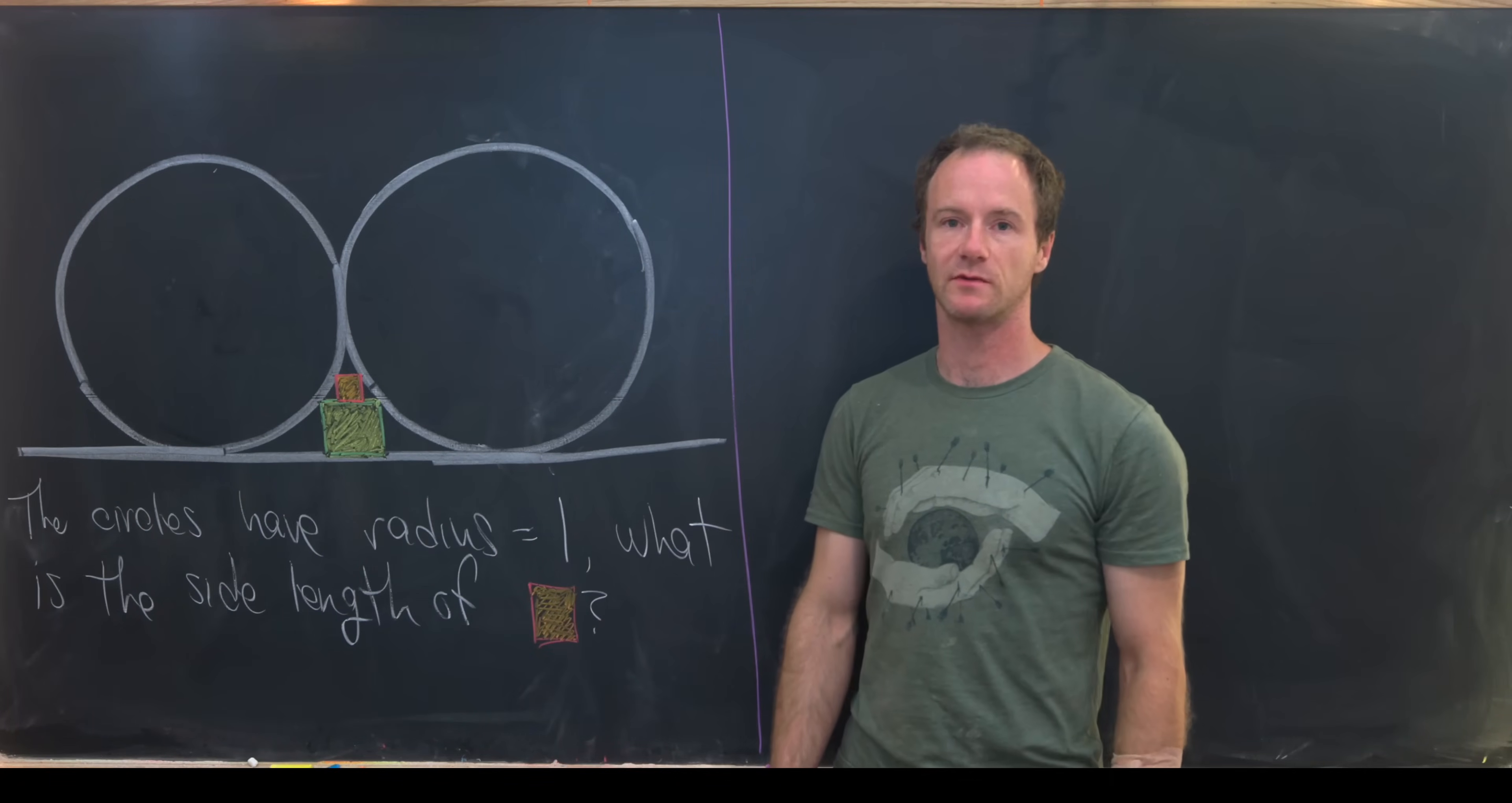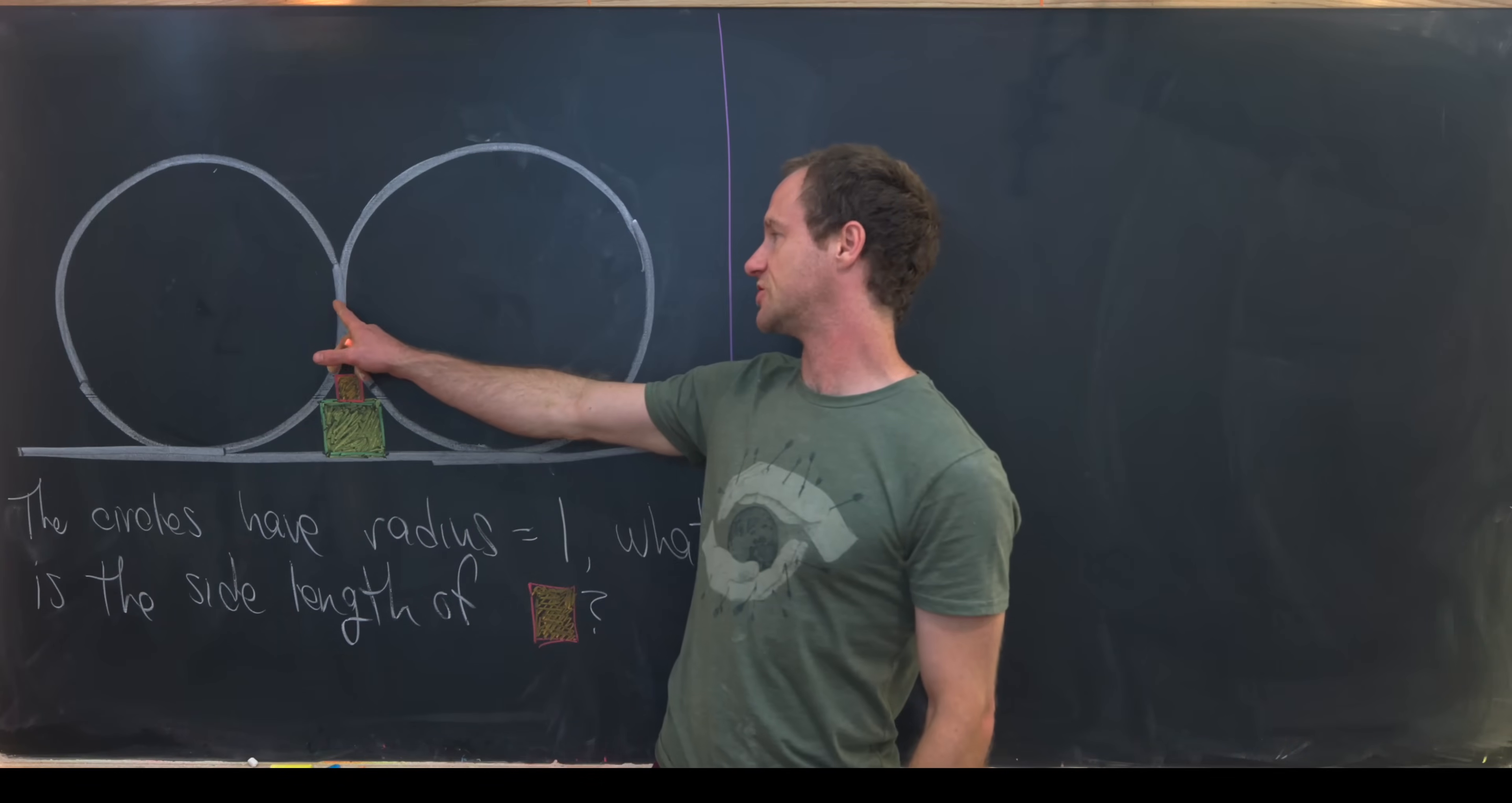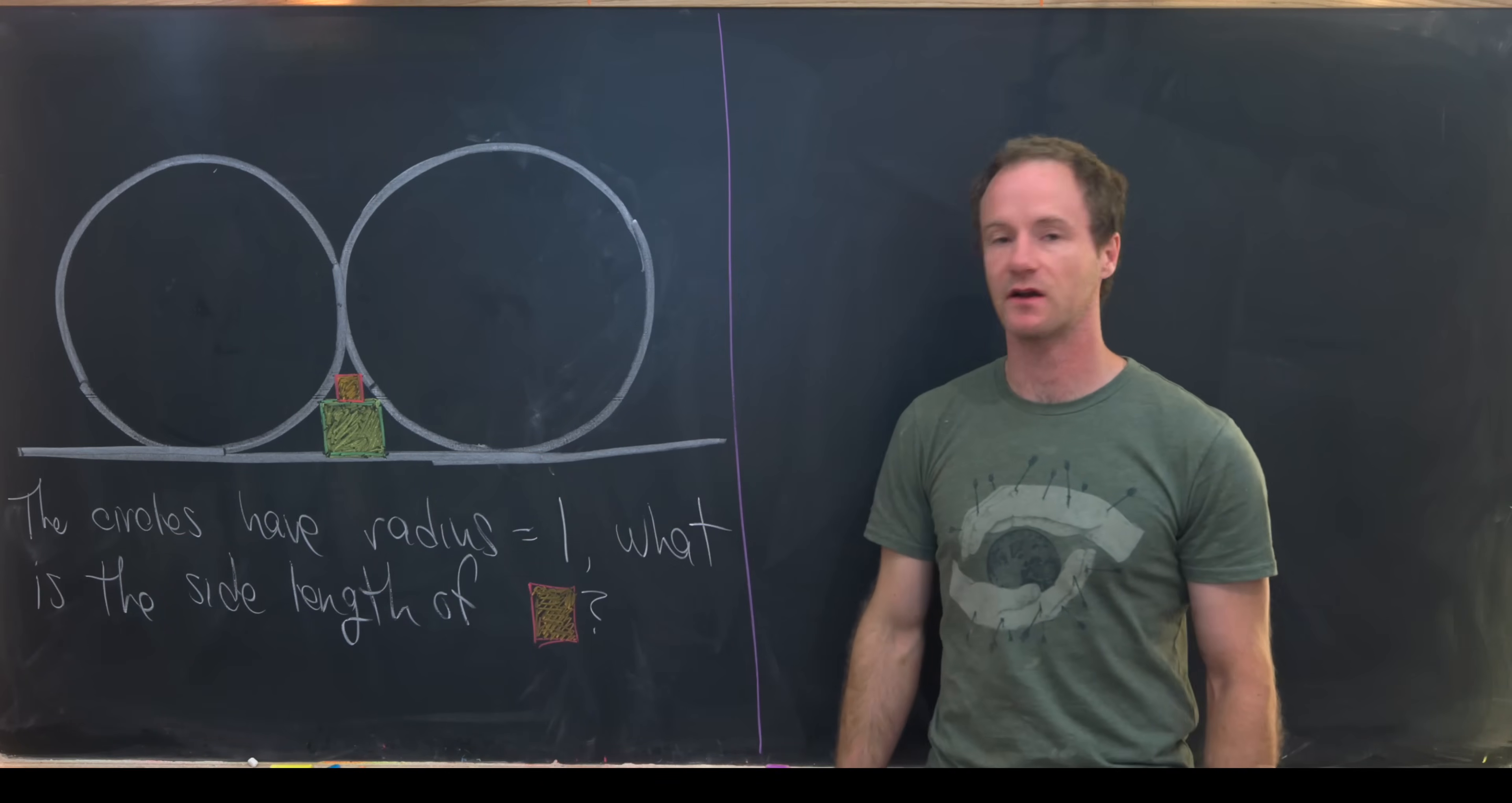Here I've got a nice geometry problem. Let's say we've got two circles of radius 1 and they are tangent to each other at this point right here. Furthermore, they share a horizontal tangent line which I've drawn down in the bottom.